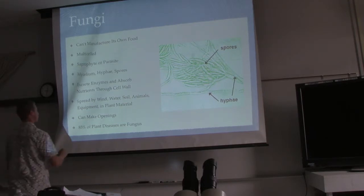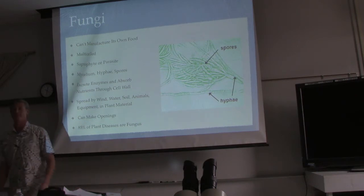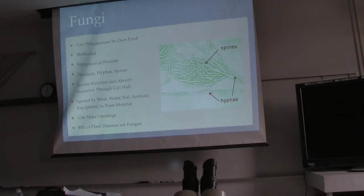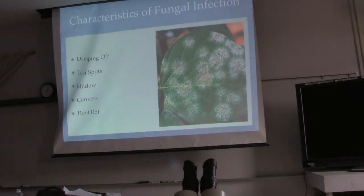85% of plant diseases are caused by fungi. So when looking at diseases, chances are 8 or 9 out of 10 will be a fungus. Even if you were to guess, you might get it right. Now let's look at the characteristics of fungal infection.